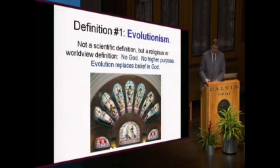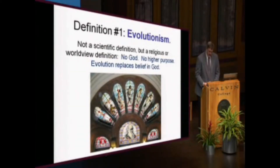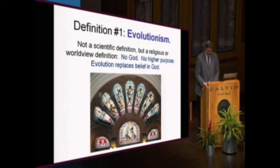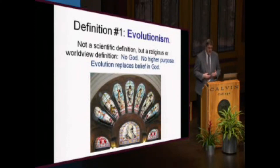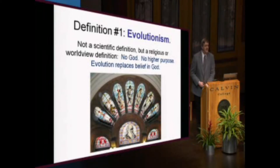For example, in an essay about evolution, biologist Stephen Jay Gould once wrote: no intervening spirit watches lovingly over the affairs of nature, and whatever we think of God, his existence is not manifest in the products of nature. Now that's not really a scientific theory — that's a worldview belief. When the theory of evolution is used to support atheism, it's often called evolutionism. You can find many examples in popular books and media stories, and like all Christians, we disagree with evolutionism.